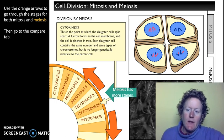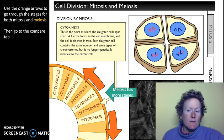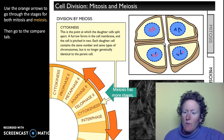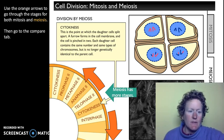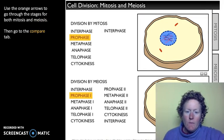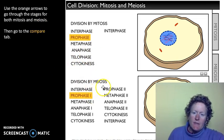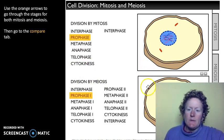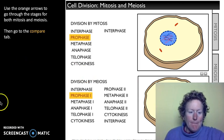Meiosis is just for creating sex cells — that's eggs and sperm. Ladies, you'll never do meiosis; you were born with all of your eggs. Guys, you're going to keep doing meiosis for quite some time. Finally we'll get to the compare tab and look at the differences in these phases — mitosis and meiosis happening at the same time. So let's go to this program.